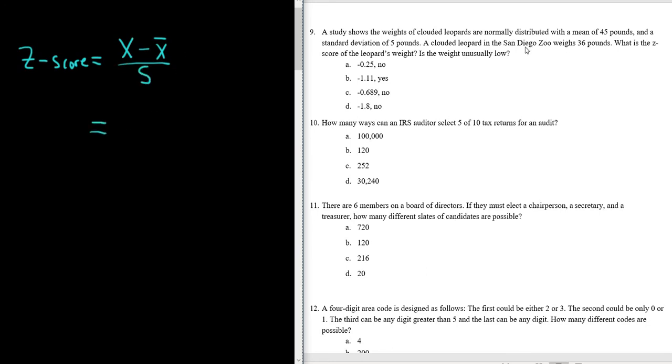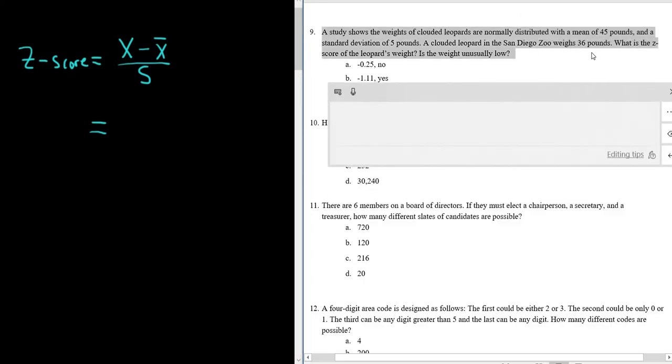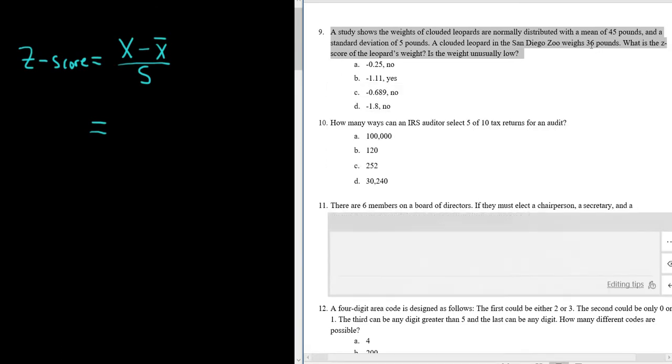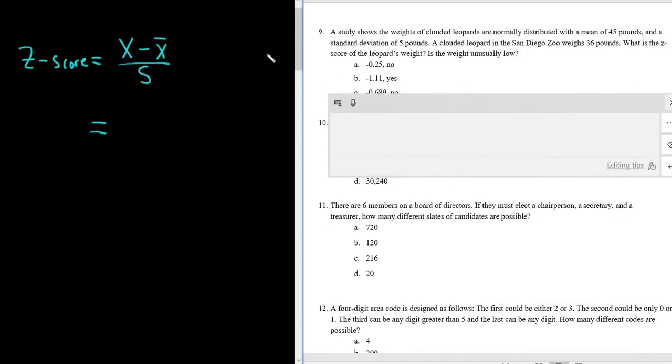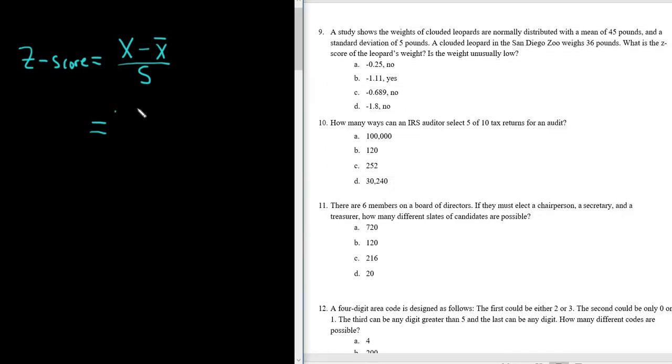X is the measurement, so in this case it's the weight of the clouded leopard in the San Diego Zoo, which is 36. X-bar is the mean, so that's 45 pounds. And s is the standard deviation, which is 5 pounds.